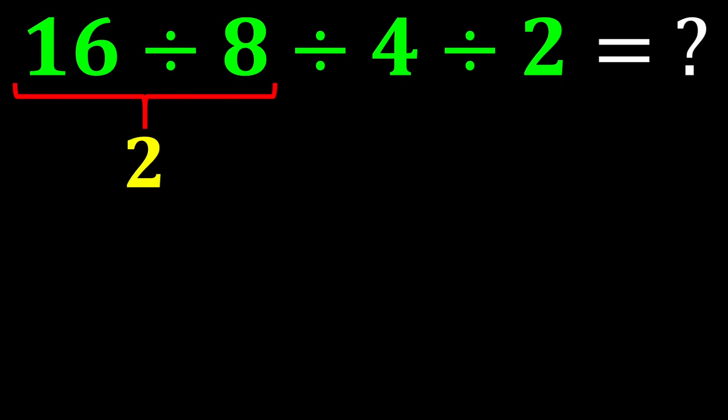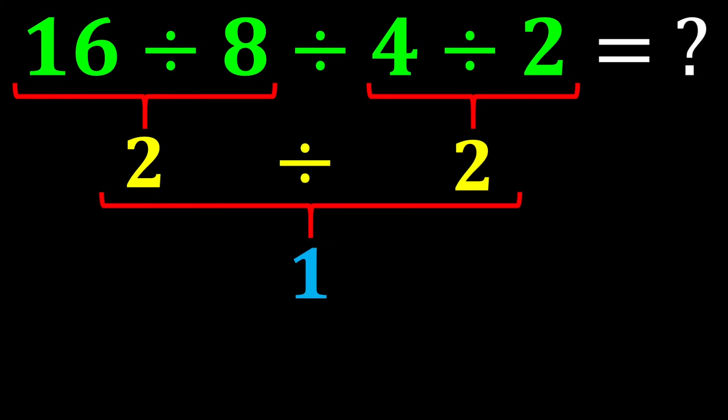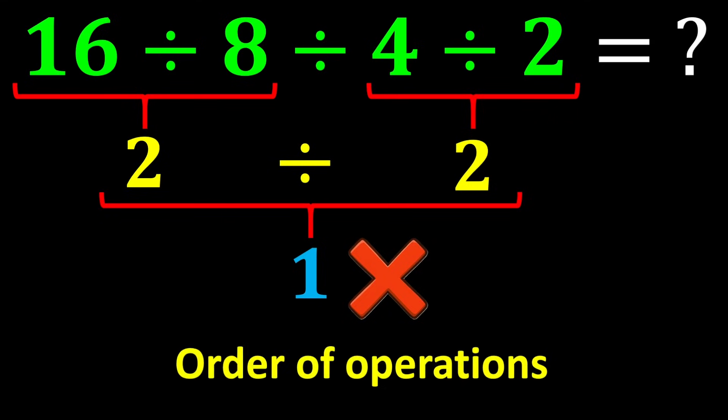16 divided by 8 gives us 2. And here 4 divided by 2 gives us 2. And finally 2 divided by 2 gives us 1. But this answer is not correct because we did not follow one of the most important rules of mathematics. The rule called the order of operations.